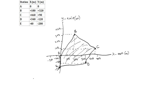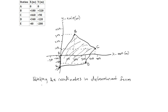Now, by writing the coordinates in determinant form, we write the coordinates in a matrix. We have point A, point B, C, D, E, and lastly A again, so that we can form our closed traverse.